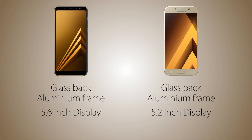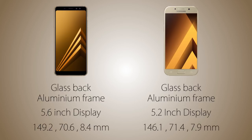The 18:9 aspect ratio means it's going to be longer while being the same width. So the A8 2018 is going to be longer in size and less wide than the A5 2017, thanks to that bezel-less design.